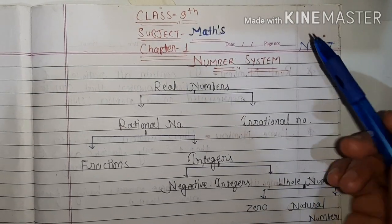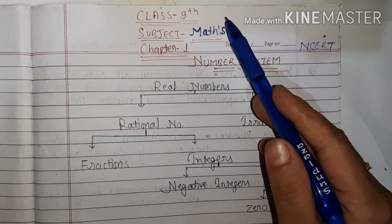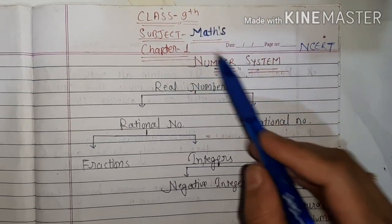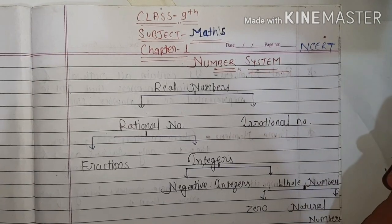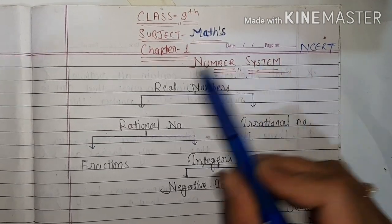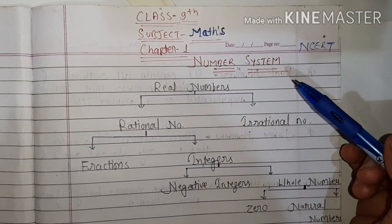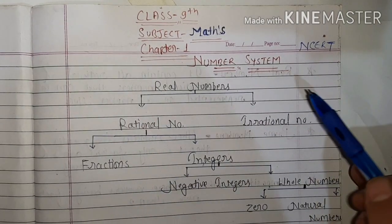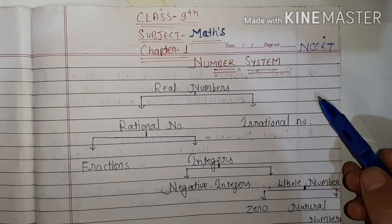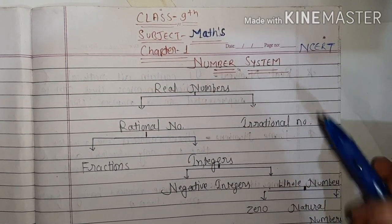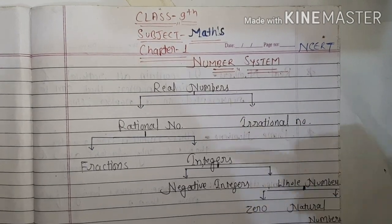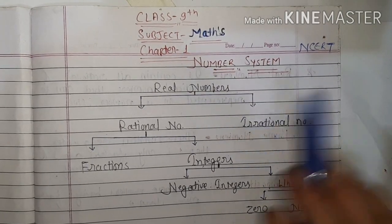I am Sonam from Mathsworld. Today we will start the number system in Maths. We will learn about real numbers. First I will tell you about the flowchart, and after the flowchart I will explain each one by one.